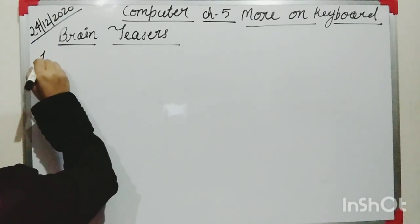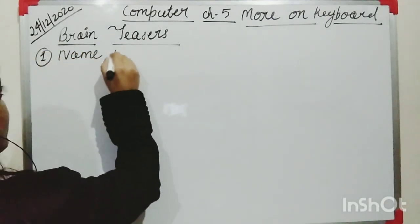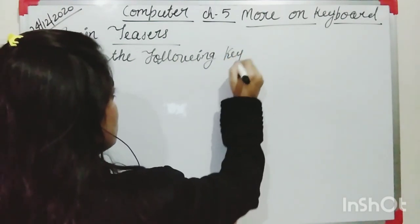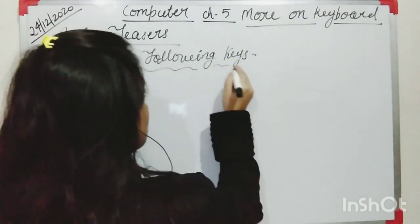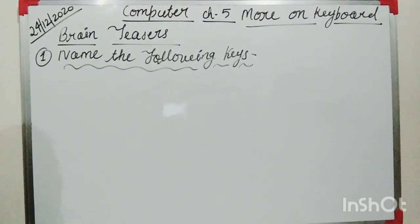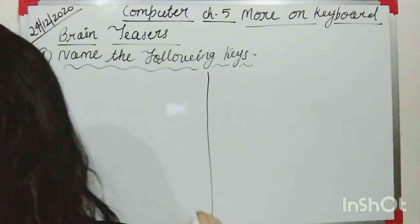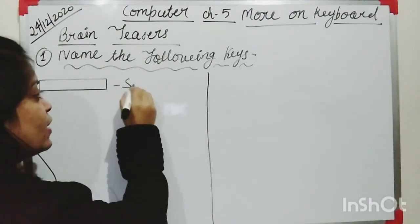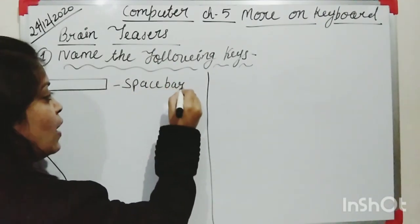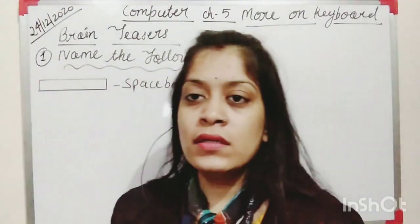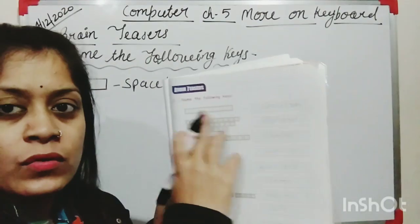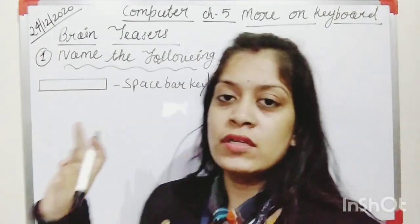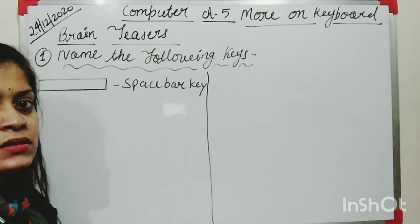Name the following piece. First one — you can see this shape. Which key is this? This is the Space Bar key. You will write Space Bar key for the first answer on page number 47.